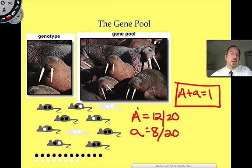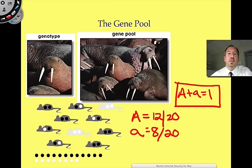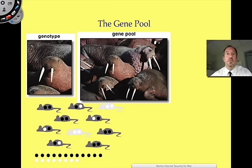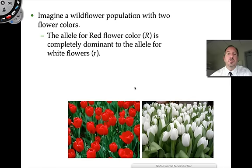Why do you care about the allele frequency in a gene pool? Once you know what the allele frequency is, you can determine whether in the next generation it's changing or not. If it's changing, that means the population is evolving — and that would be an example of microevolution.